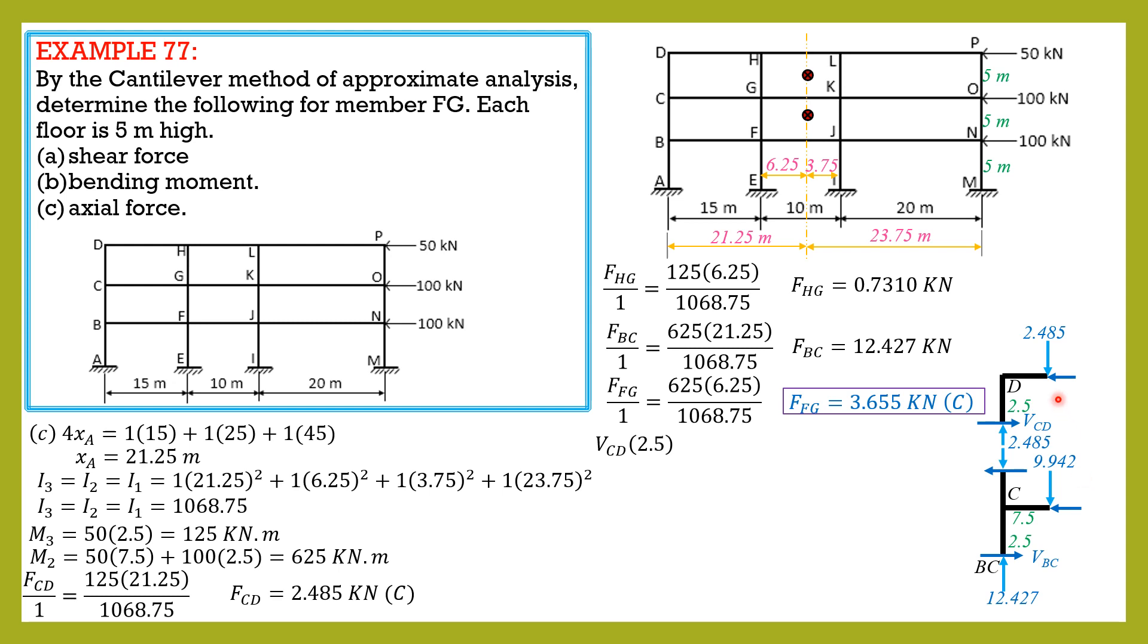Summation moment about this point equals 0. Shear in CD times 2.5 equals 2.485 times 7.5 (that's half of 15). So shear in CD is equal to 7.455 kilonewtons. Then we need shear in BC to sum up moment here. This is 7.455, which is equal to shear in CD.